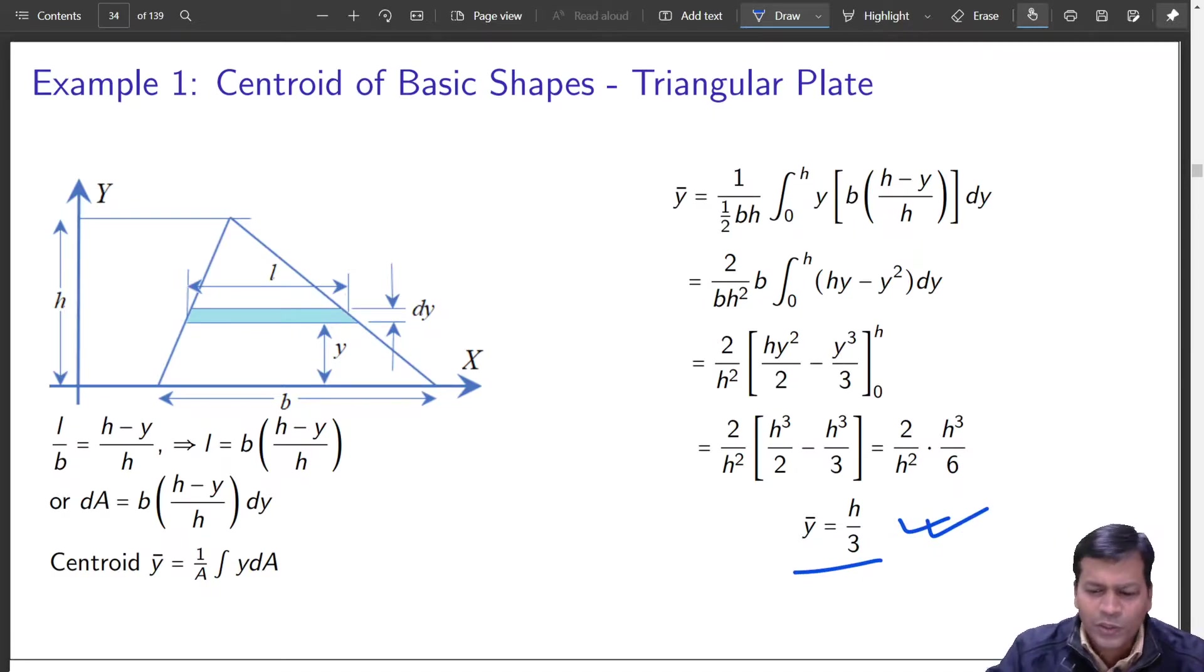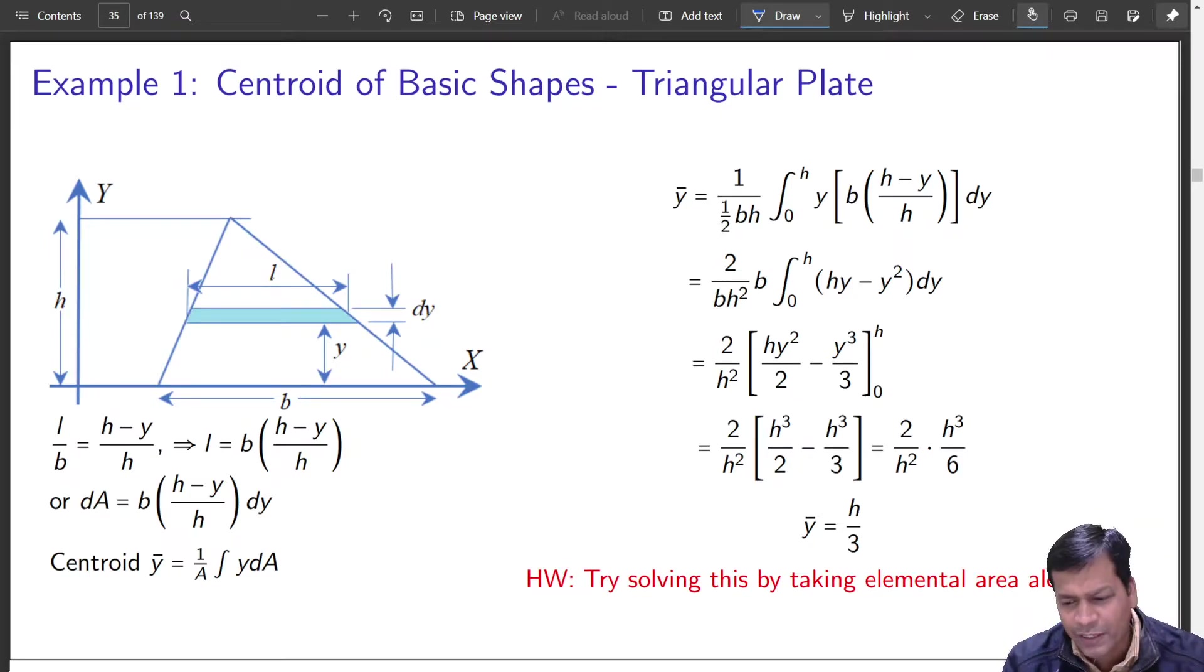This is your standard age old result that you have seen quite long time now. So this is y, this is total h, if it is h, so it is at a h by 3 from the base of the triangle. So you can try solving this incremental, taking elemental area along y also you can take, along y also you can take and find out this. Can you do it?